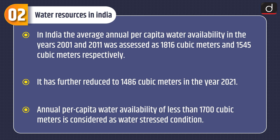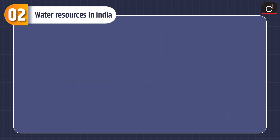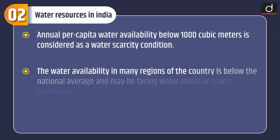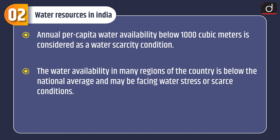Annual per capita water availability of less than 1700 cubic meters is considered as a water stressed condition. Annual per capita water availability below 1000 cubic meters is considered as a water scarcity condition. The water availability in many regions of the country is below the national average and may be facing water stress or scarce conditions.